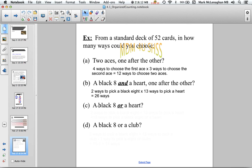Next example is a black eight or a heart. Here we're using 'or', so that tells us we have to add. There's two ways of picking a black eight and 13 ways of picking a heart. Add them together, so there's 15 ways of picking a black eight or a heart. In this case we're only picking one card but we have 15 possibilities.